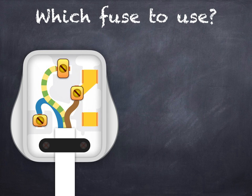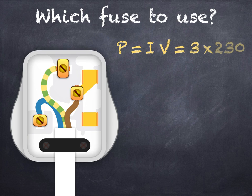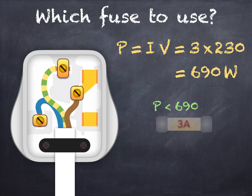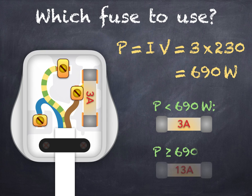Now you've probably realised that there's a cut off point. Where any power rating above a certain value would need a 13 amp fuse, and below it would need a 3 amp fuse. You can calculate using the equation P equals IV with a current of 3 amps. The value works out to be 690 watts. So if the power rating of the device is below 690 watts, you'd use a 3 amp fuse. And if it's greater than or equal to 690 watts, you'd use a 13 amp fuse.